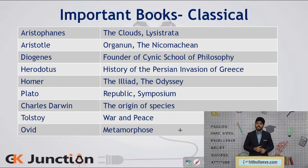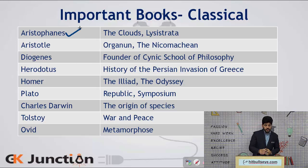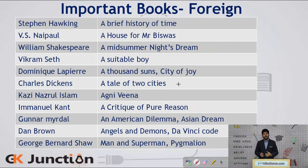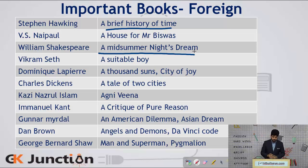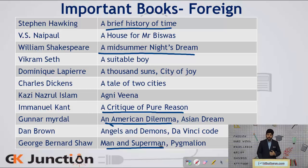These were classical books written by Indians or important in the Indian context. We also have to look into classical books in the foreign sphere. These include: Aristophanes wrote 'The Clouds'; Aristotle wrote 'Organon'; Plato's 'Republic' and 'Symposium'; Homer wrote 'The Odyssey'; Tolstoy's 'War and Peace'; Stephen Hawking's 'A Brief History of Time'; William Shakespeare wrote 'A Midsummer Night's Dream'; Immanuel Kant wrote 'Critique of Pure Reason'; Gunnar Myrdal wrote 'The American Dilemma' and 'The Asian Dream'; George Bernard Shaw wrote 'Man and Superman' and 'Pygmalion'. These were important foreign books.